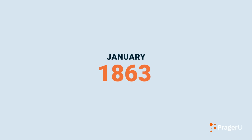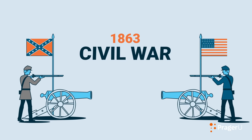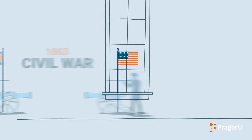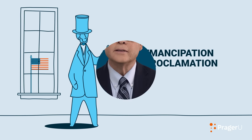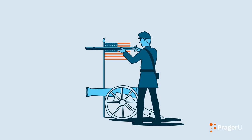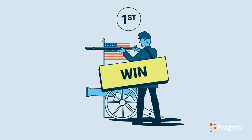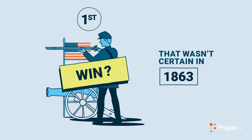In January 1863, at the height of the Civil War, President Abraham Lincoln issued the Emancipation Proclamation. That proclamation declared free any person held as a slave in the rebel states. But ending slavery would require much more than a wartime executive order. First, the Union would have to win the war — and that wasn't certain in 1863.